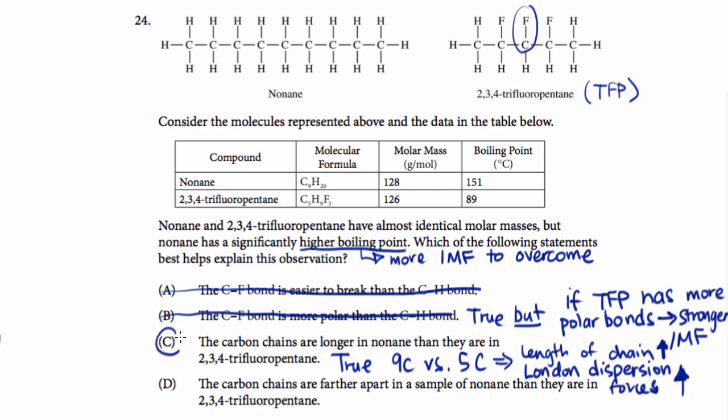So C is the correct answer. But let's look at D anyway, just to make sure we didn't make any bad decisions. So just checking, D says the carbon chains are further apart in a sample of nonane than they are in 2,3,4-trifluoropentane. Well, we don't actually know if this is true or not, but let's see if this statement were true, would it lead to the boiling point trend we're seeing?